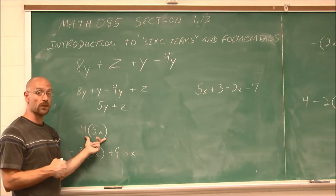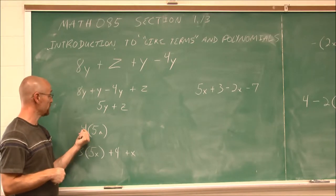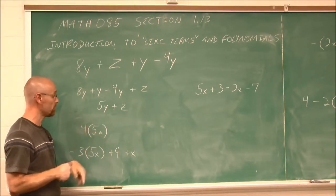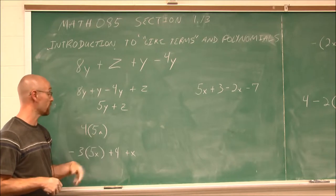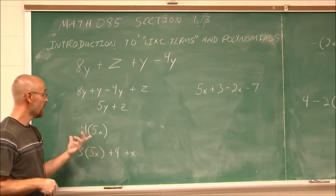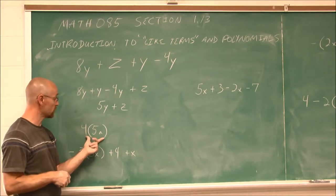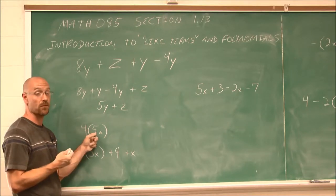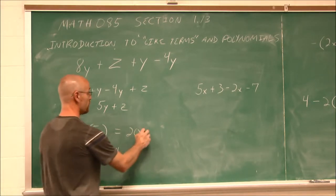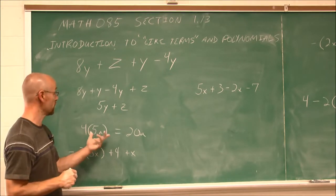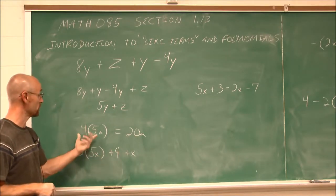Another property we learned was the commutative or associative property of multiplication. Here I have 4 times the quantity of 5 times a — all multiplication. I could rearrange this as 5 times 4 times a. Since I don't know what a is, I do 4 times 5, which is 20 times a. I used the associative property to simplify down to one integer and one variable, instead of two integers multiplied.